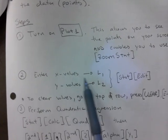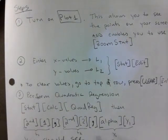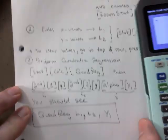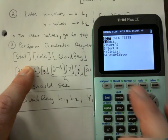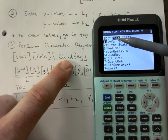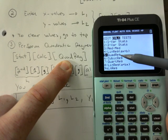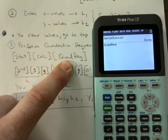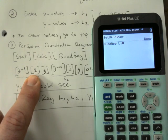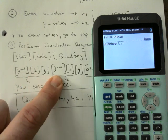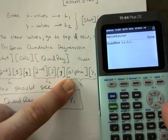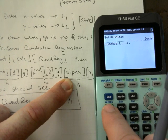We've turned on Plot 1 and entered values into L1 and L2. Now we perform the regression. Press STAT, go to Calculate at the top, then go down to the fifth option — QuadReg — and hit Enter. Now press Second 1 for L1, then the comma button (just above the 7), then Second 2 for L2, then comma.